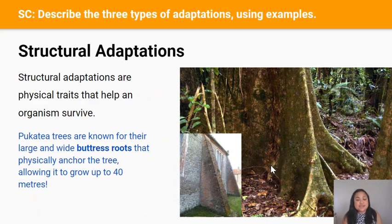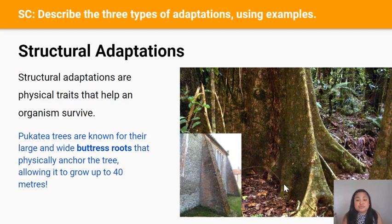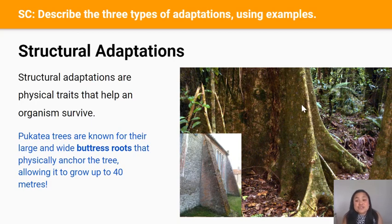Structural adaptations are physical traits that help an organism survive in its habitat. In this picture you can see the bottom trunk of a Pukatia tree. The structural adaptation shown here is called buttress roots. In structural engineering a buttress is a triangular structure built in brick or stone against a wall to strengthen it and stop it falling over. Similarly, buttress roots provide the Pukatia tree with structural support, allowing it to grow up to 40 meters high.